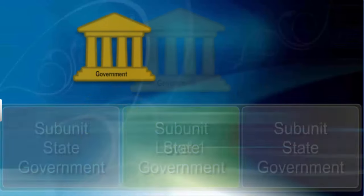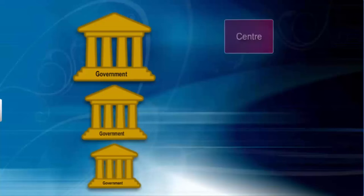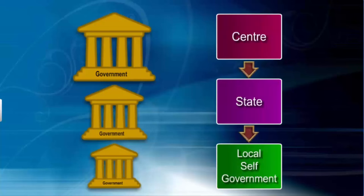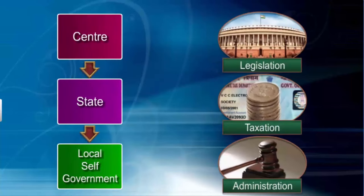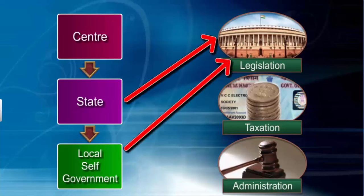Under the federal system, there are two or more tiers or levels of government — the central government, the state government, and, as an exception in India, a third tier of local self-government. In federalism, each tier has its own jurisdiction in specific matters of legislation, taxation, and administration.